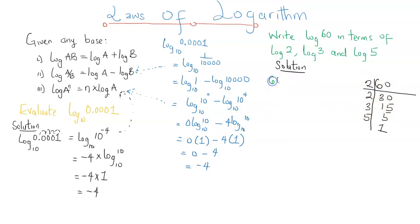We can see that 60 is equal to 2 times 2 times 3 times 5. Therefore, I can write log of 60 as the log of 2 times 2 times 3 times 5. So 2 times 2 can just be written as 2 squared. So this is 2 squared times 3 times 5.